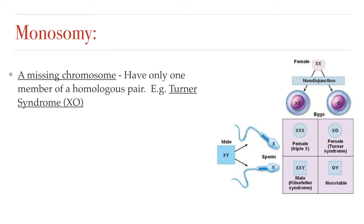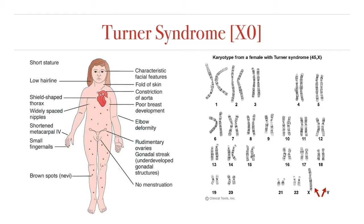One of the effects of non-disjunction is that some gametes can end up with a missing chromosome. In most cases in humans, embryos with a full monosomy are not viable — the effect of missing a full chromosome is so severe that the embryos do not survive and result in a miscarriage. However, there is one exception: Turner Syndrome, which is caused by a monosomy of the X chromosome. Individuals with Turner Syndrome have a single sex chromosome — a single X, no second X, and no Y chromosome — which means they are always female.